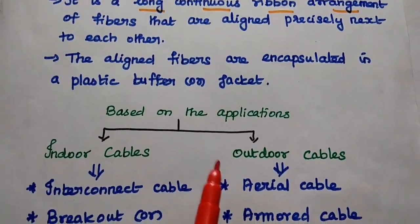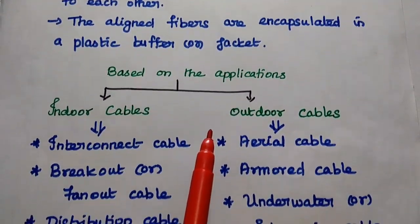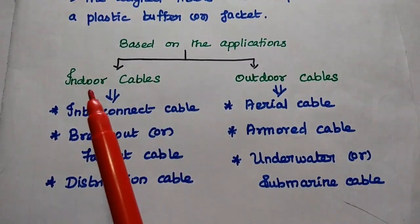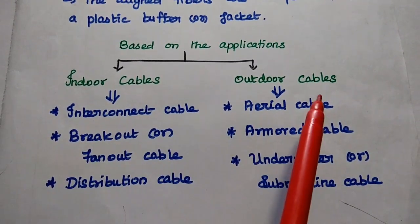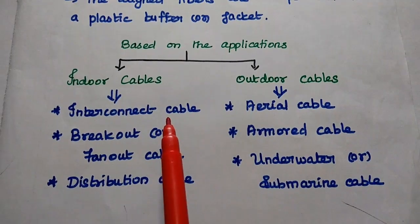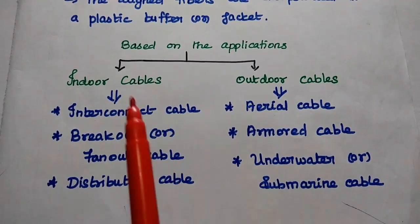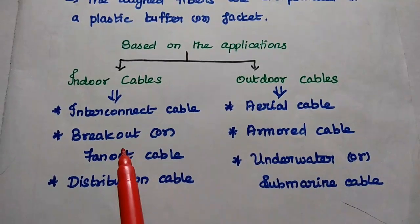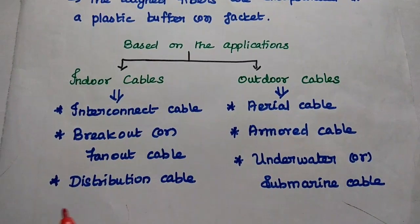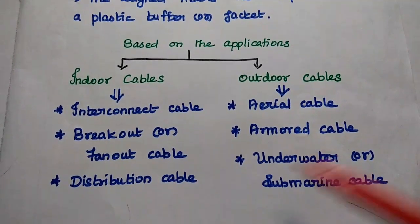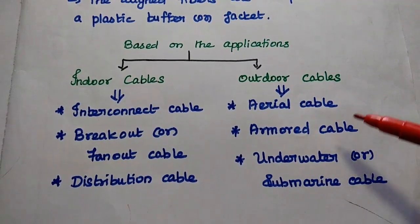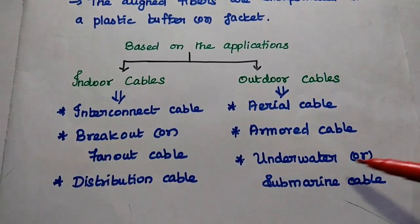Based on the applications, cables can be broadly classified into two types: indoor cables and outdoor cables. Examples of indoor cables are interconnect cable, breakout or fan-off cable, and distribution cable. For outdoor cables, we have aerial cable, armoured cable, and underwater or submarine cable.